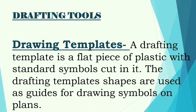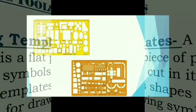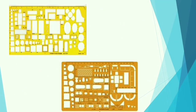Next are drawing templates. A drafting template is a flat piece of plastic with standard symbols cut in it. The shapes are used as guides for drawing symbols on plans. Here are the templates — if you want to draw an oblong, it's there; circles from bigger to smaller; rectangles — everything is there for whatever symbol you want to draw.